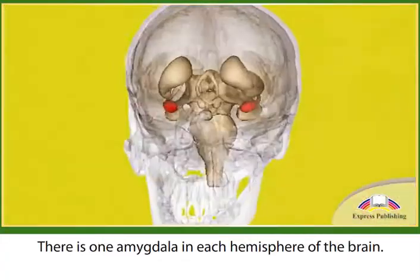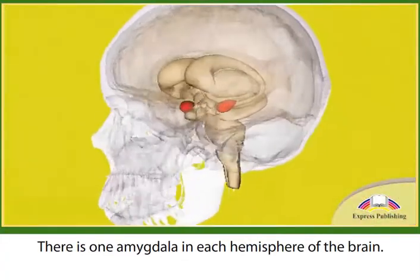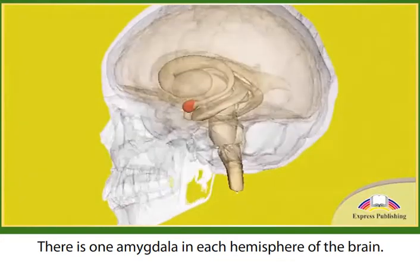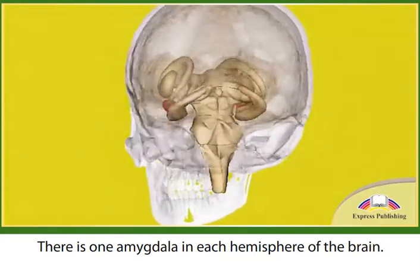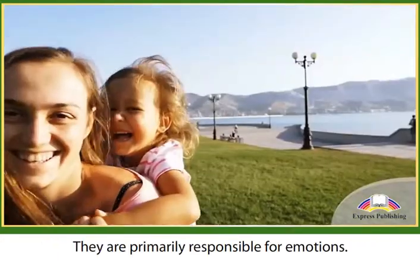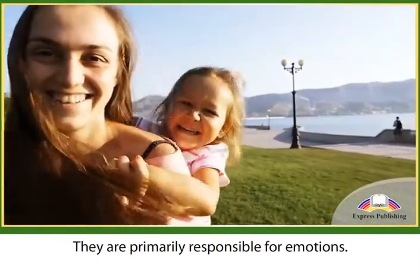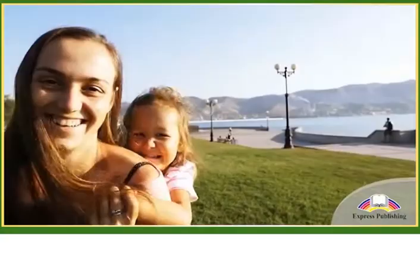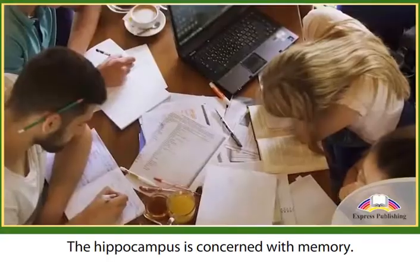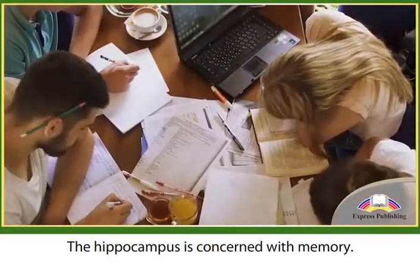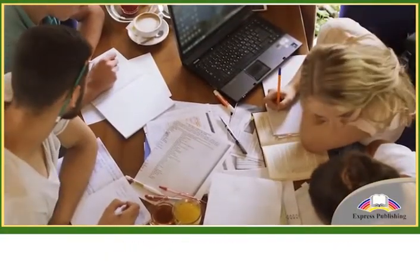There is one amygdala in each hemisphere of the brain. They are primarily responsible for emotions. The hippocampus is concerned with memory.